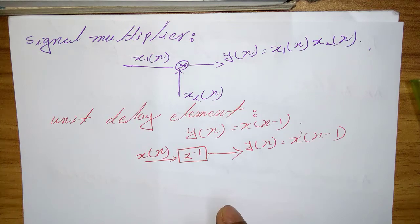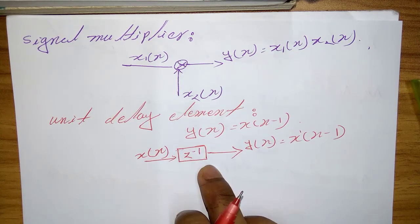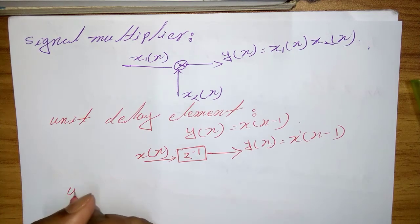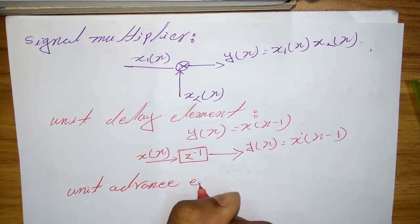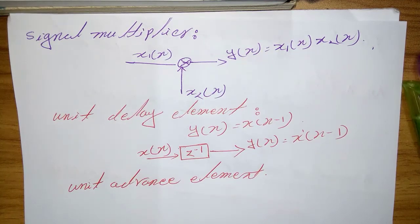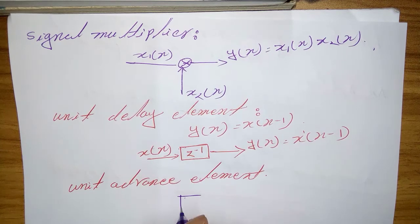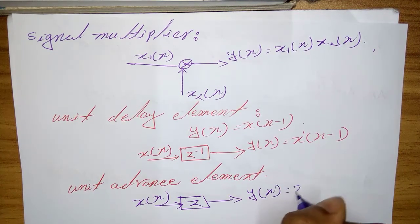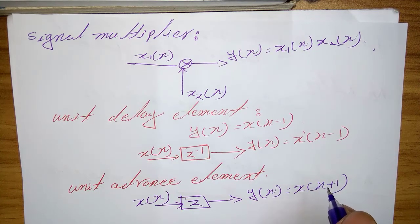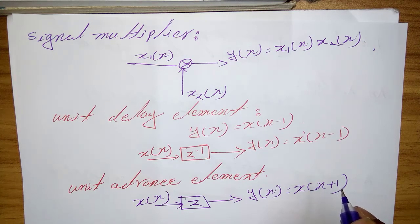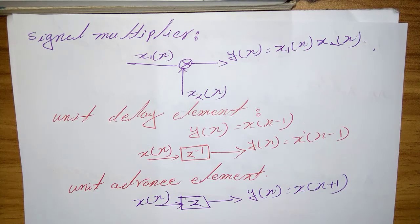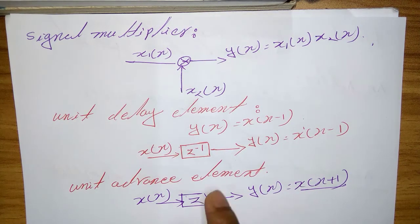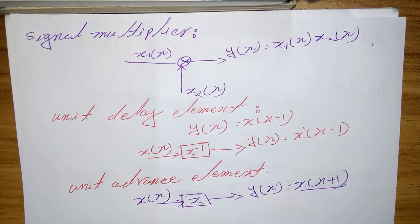Next one is a unit advance element. The unit advance element block diagram: input x(n) and output is y(n) = x(n+1). In contrast to the unit delay, the unit advance moves the input x(n) ahead by one sample in time to x(n+1), with the operator z being used to denote the unit advance.